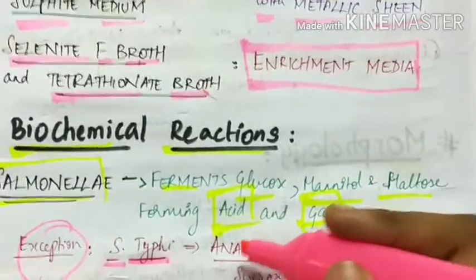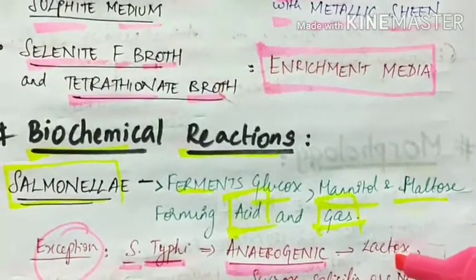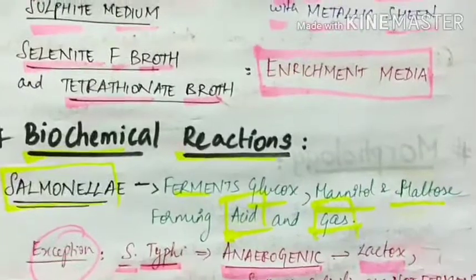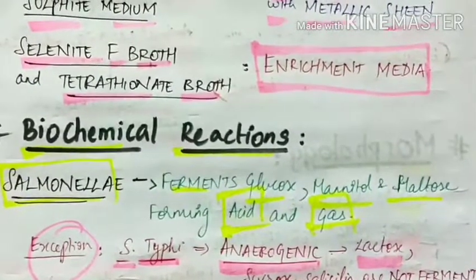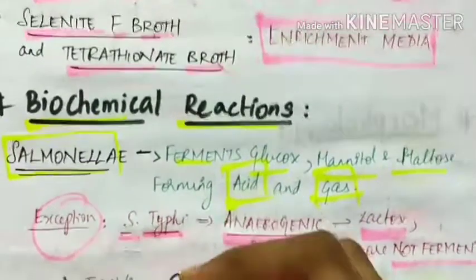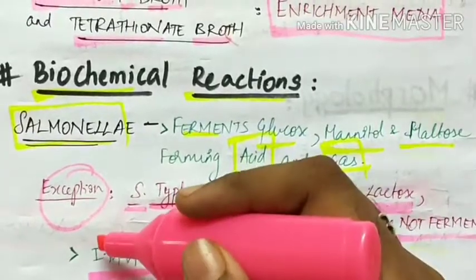The Salmonella typhi is anaerogenic. Lactose, sucrose, and salicin are not fermented.